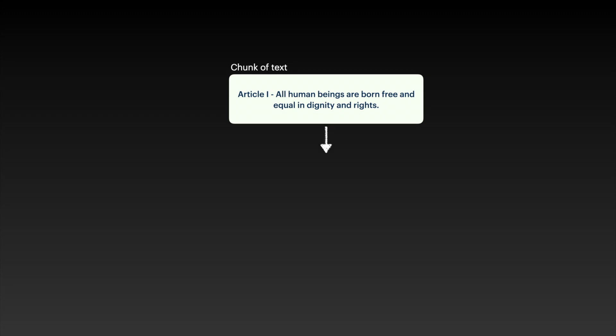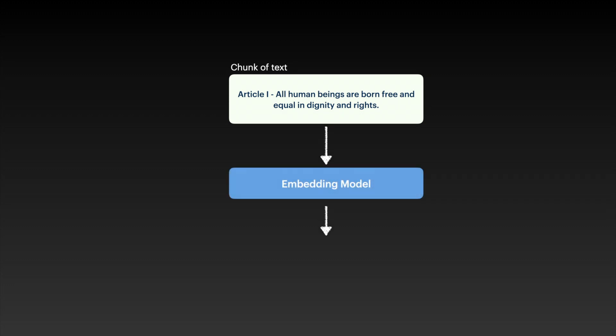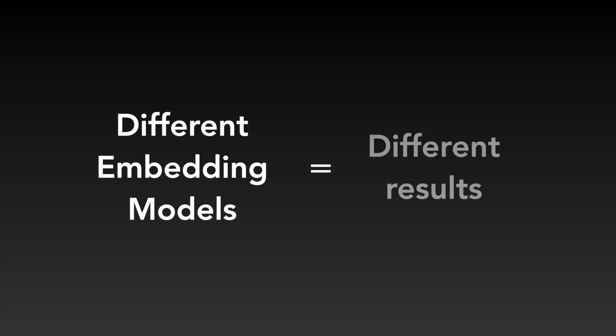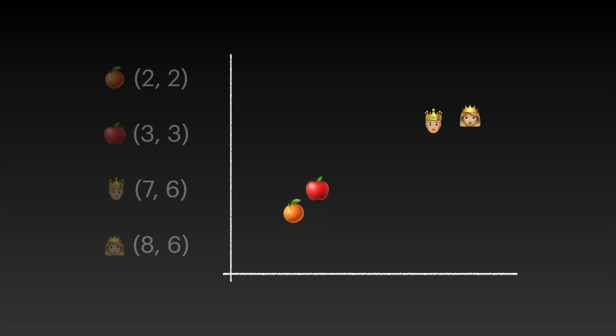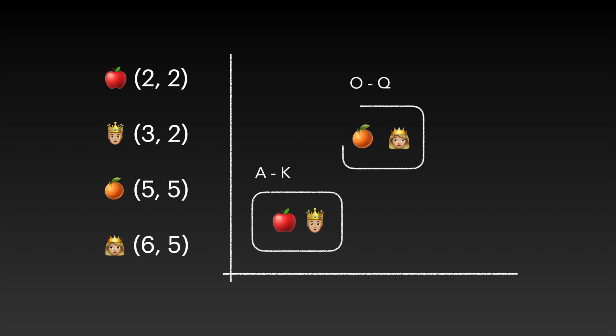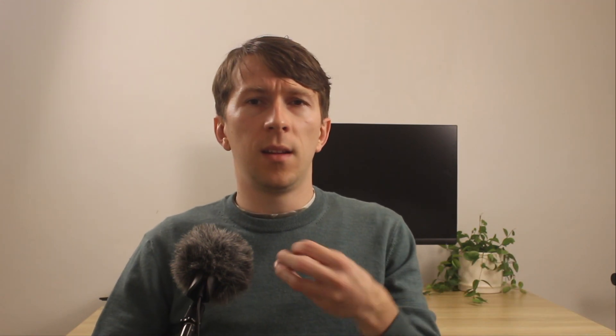But now you might wonder how to generate these vectors — and that's our second concept: the embedding model. To transform our chunks of text into embeddings, an embedding model is used. An embedding model is nothing else than an algorithm set to transform data into a vector. Different embedding models lead to different results. Another algorithm could, for example, consider similarity based on alphabetical order — in that case, apple would be closer to king than to orange, which doesn't make much sense. In reality, these vectors contain thousands of dimensions instead of just two, making it far more powerful and accurate.